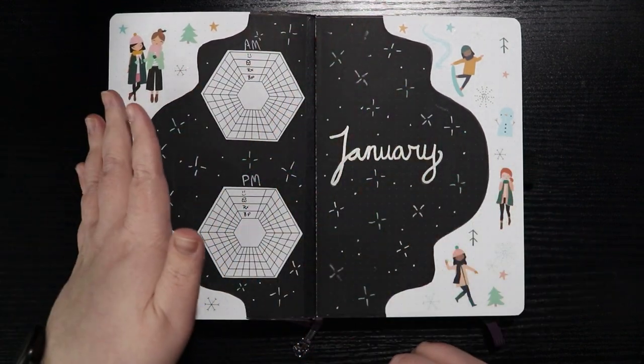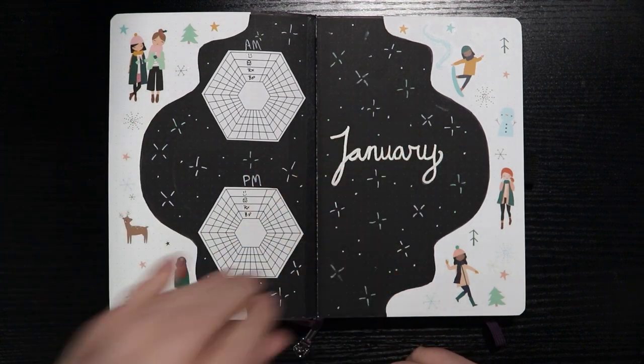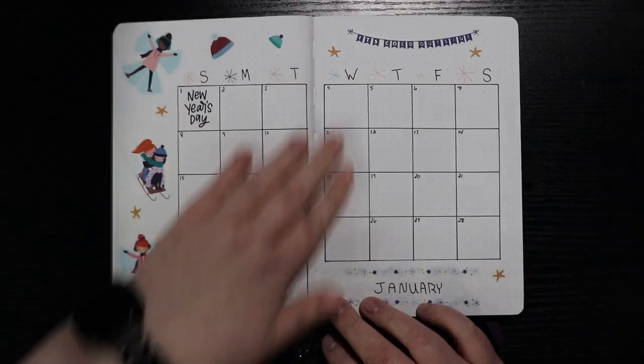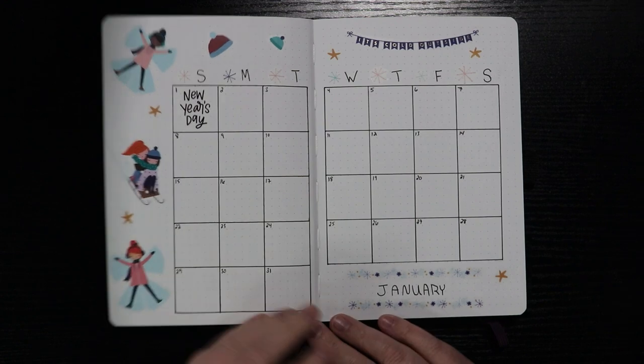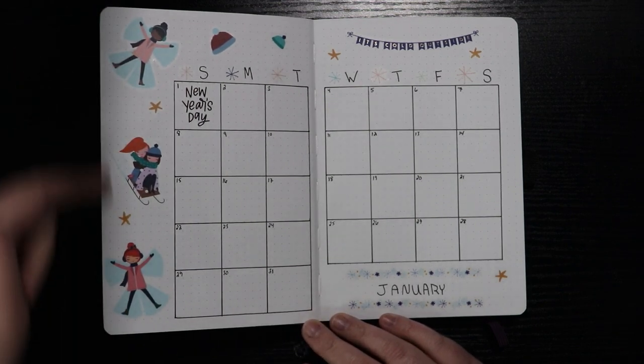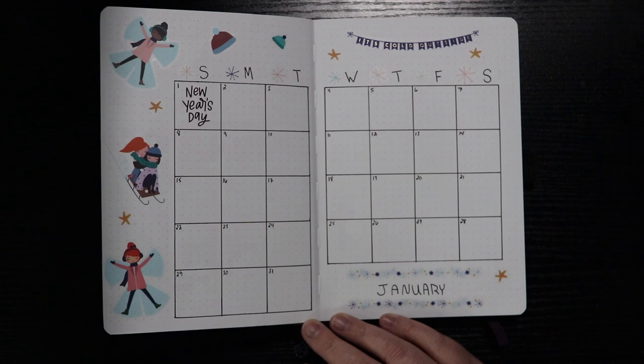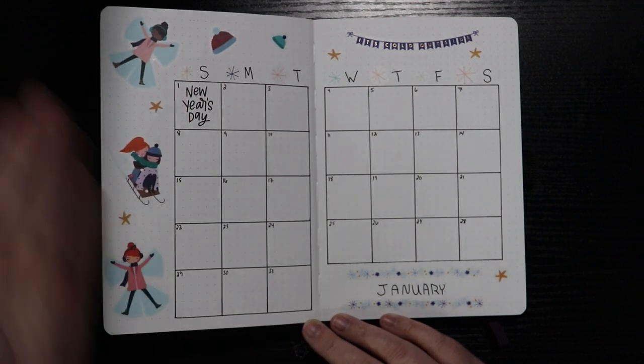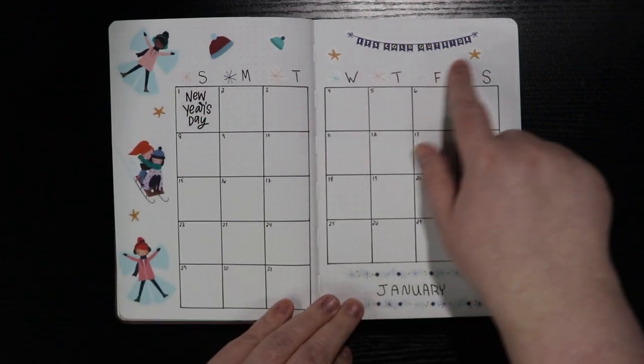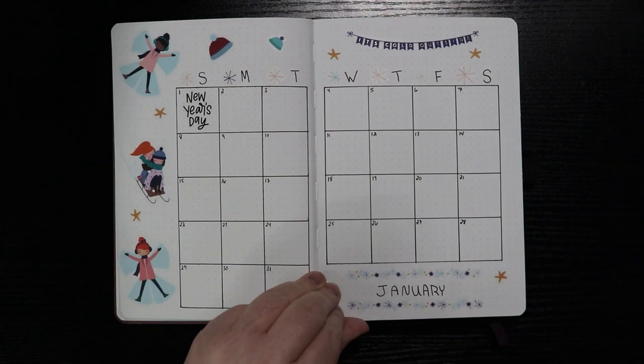So I finally just taped it on there, made a new side for over here, called it a day. And then we have our January calendar with some more decorations. I've got a New Year's Day on here. Nothing else at this point. But you know, it's cold outside because it is.